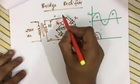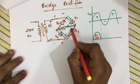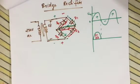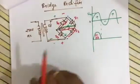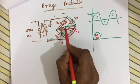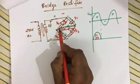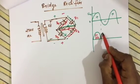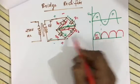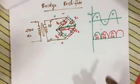During the negative half cycle, the polarity reverses. D2 and D4 are now forward biased and conduct. In both half cycles, the current across RL flows in the same direction. So for positive half cycle current passes through D1 and D3, and for negative half cycle through D2 and D4 — giving a full wave output.